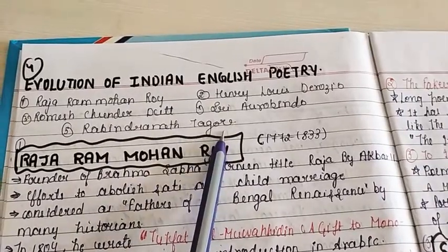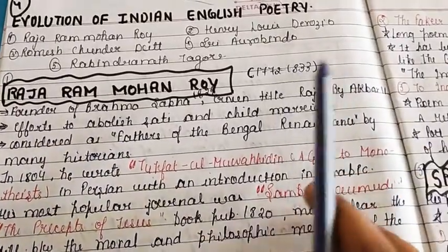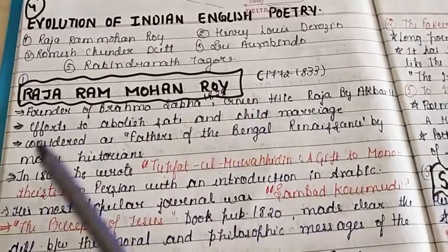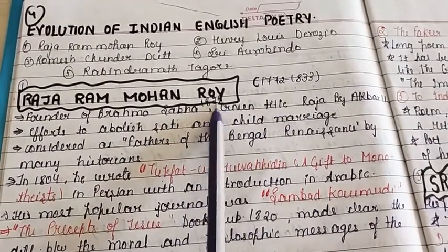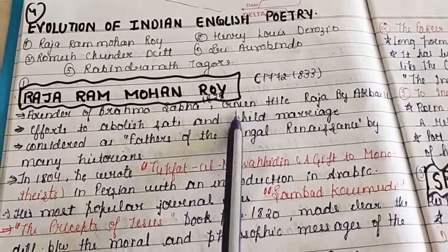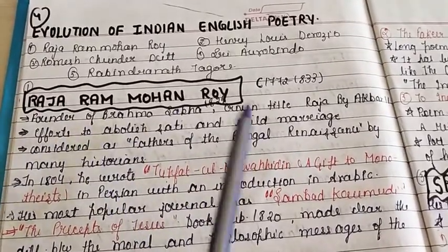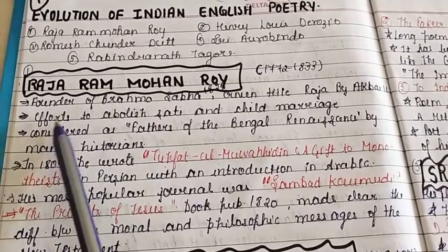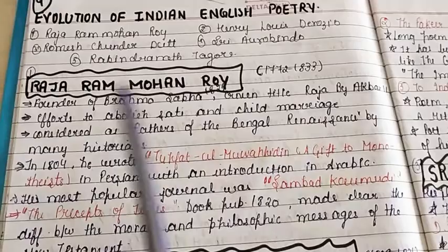First: Raja Rammohan Roy. His lifespan was 1772 to 1833. He was the founder of Brahma Samaj in 1828, and was given the title 'Raja' by Akbar II. He made many efforts to abolish sati and child marriage.